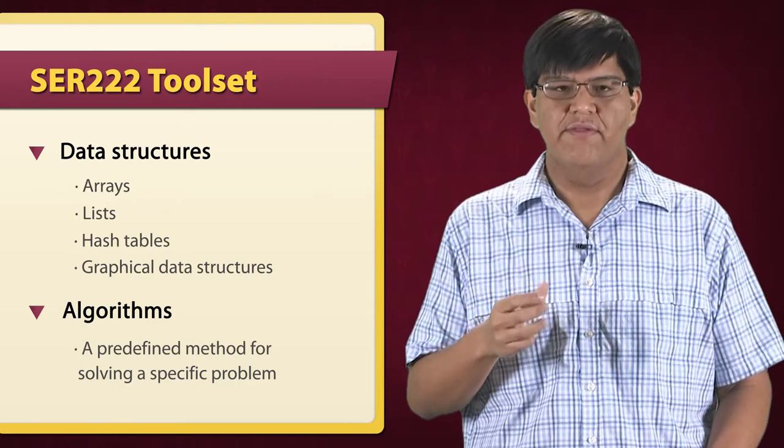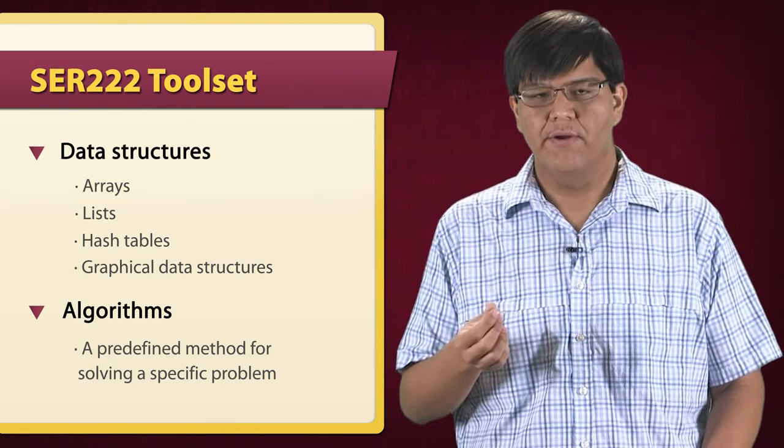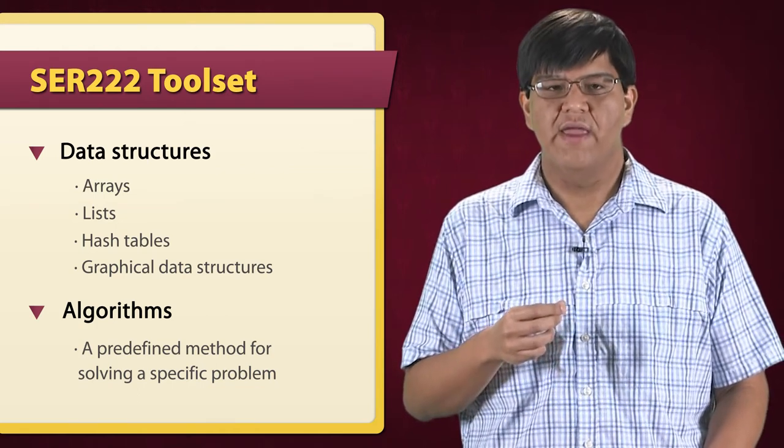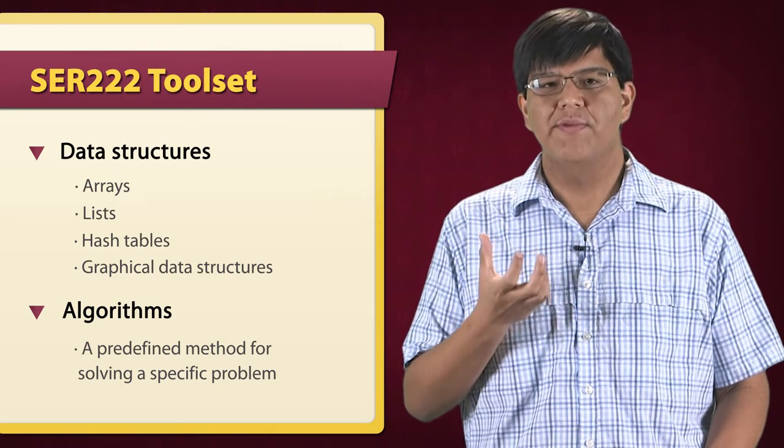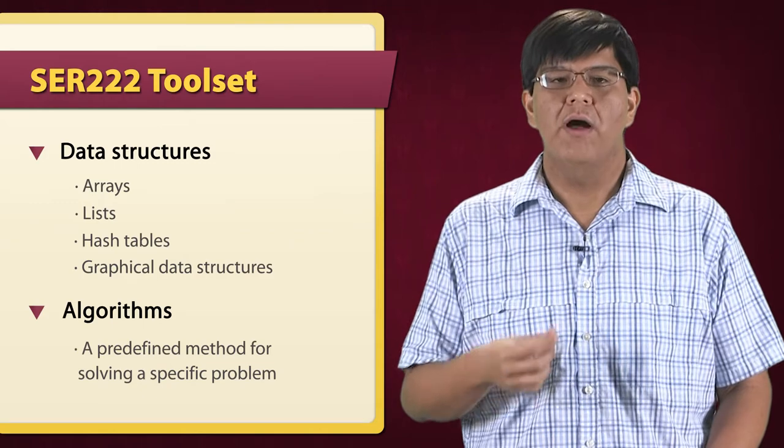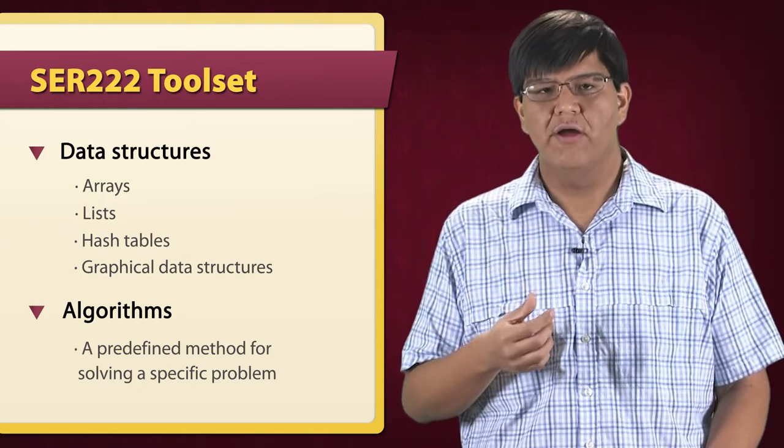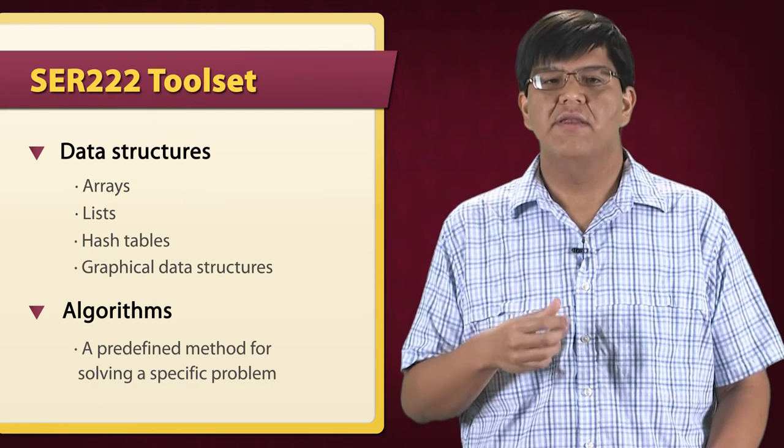Graphs are used all over the place - in things like social networks or modeling a road network. A natural question to ask is how do I know if two points are connected? Do two people know each other? Is it possible to get from this intersection to another intersection? To answer questions like that, we'll need to investigate algorithms like breadth-first search or depth-first search, ways to test for connectivity in a graph.